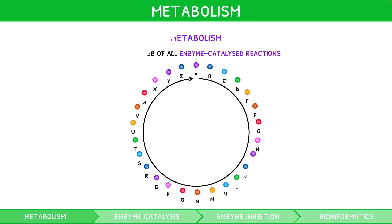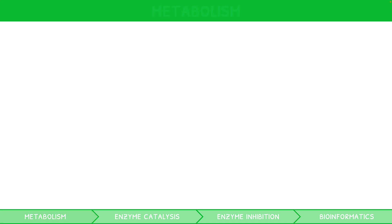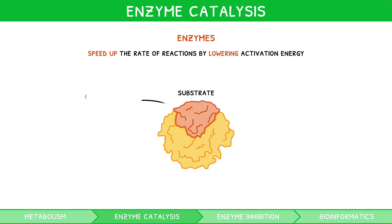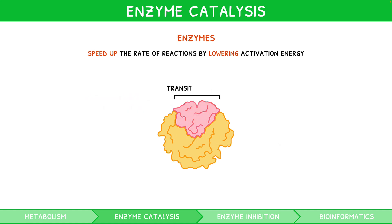As introduced in the third video of our IB Biology Topic 2 video series, enzymes are proteins which speed up the rate of chemical reactions by lowering the activation energy for the reaction to take place. They do so by bonding to substrates complementary in shape and charge at their active site, enabling a transition state and facilitating the conversion to a product, a process known as enzyme catalysis.